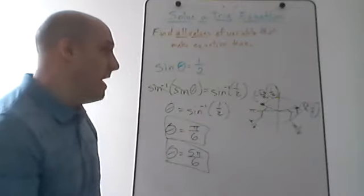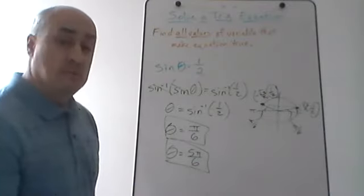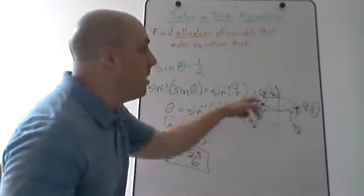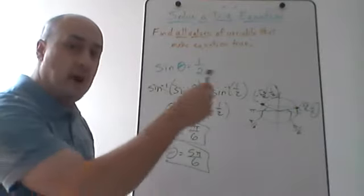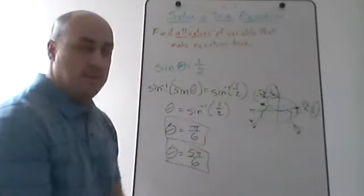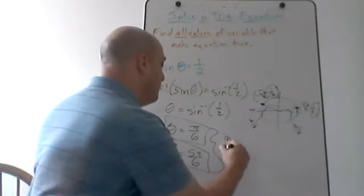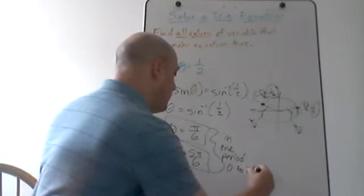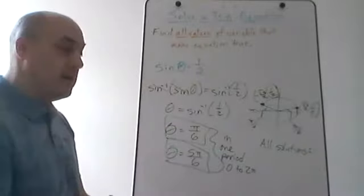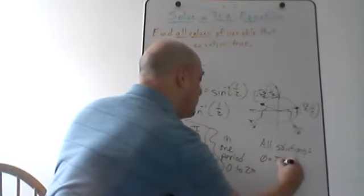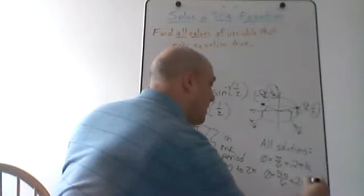When I draw that horizontal line at y equals one half, it only hits the circle two times, and these are the two angles. But remember, when I draw the graph of the sine function or keep going around the unit circle multiple times, every time I come back to these points the sine of those angles is going to give me one half. So the notation I use to denote all solutions is: theta equals pi over 6 plus 2 pi k, and theta equals 5 pi over 6 plus 2 pi k.